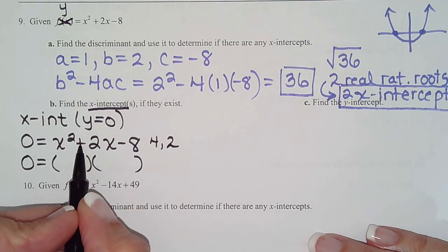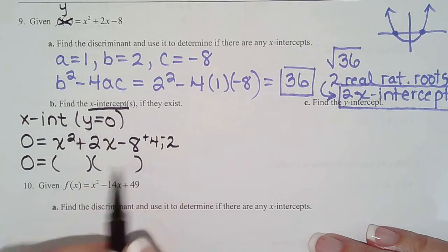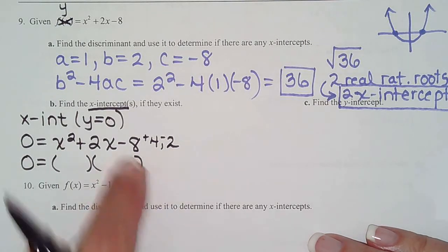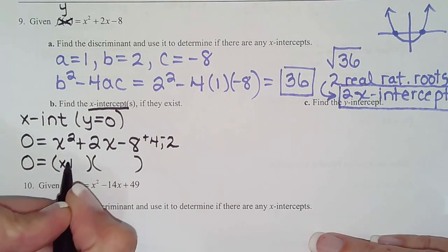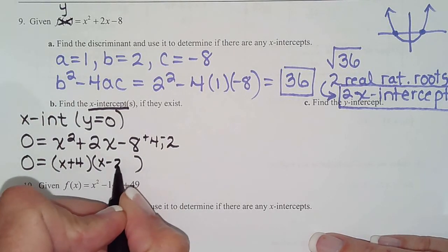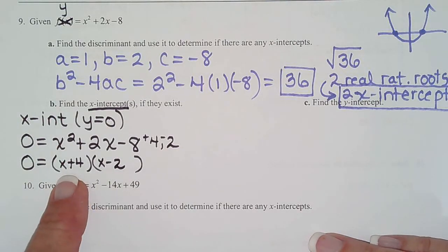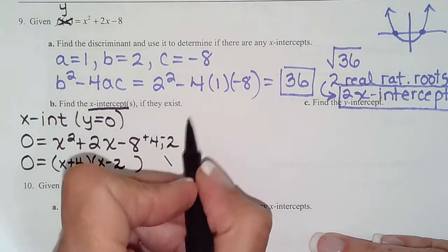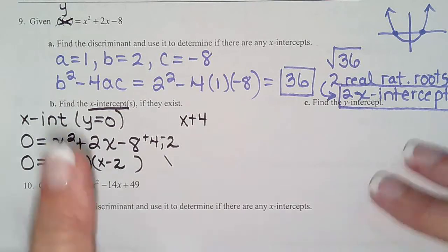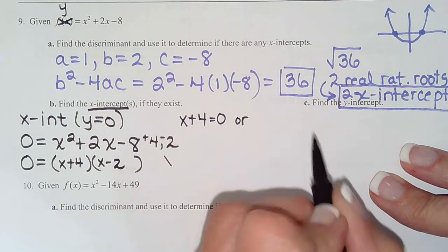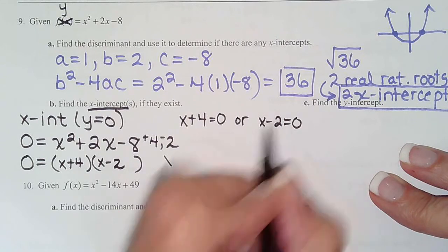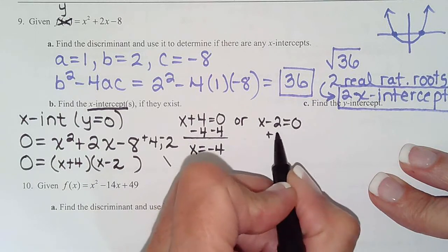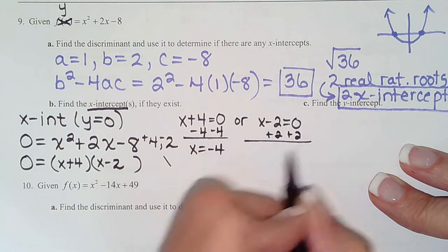This says the signs are different. This says the largest one's plus. So positive 4, negative 2. 4 - 2 is 2, 4 times -2 is -8. So then we plug them in: (x + 4)(x - 2). And then using another thing we learned in chapter 4, if a times b equals 0, either a is 0 or b is 0. So solve for x, I get x = -4. Solve for x over here, add 2 to both sides, I get x = 2.